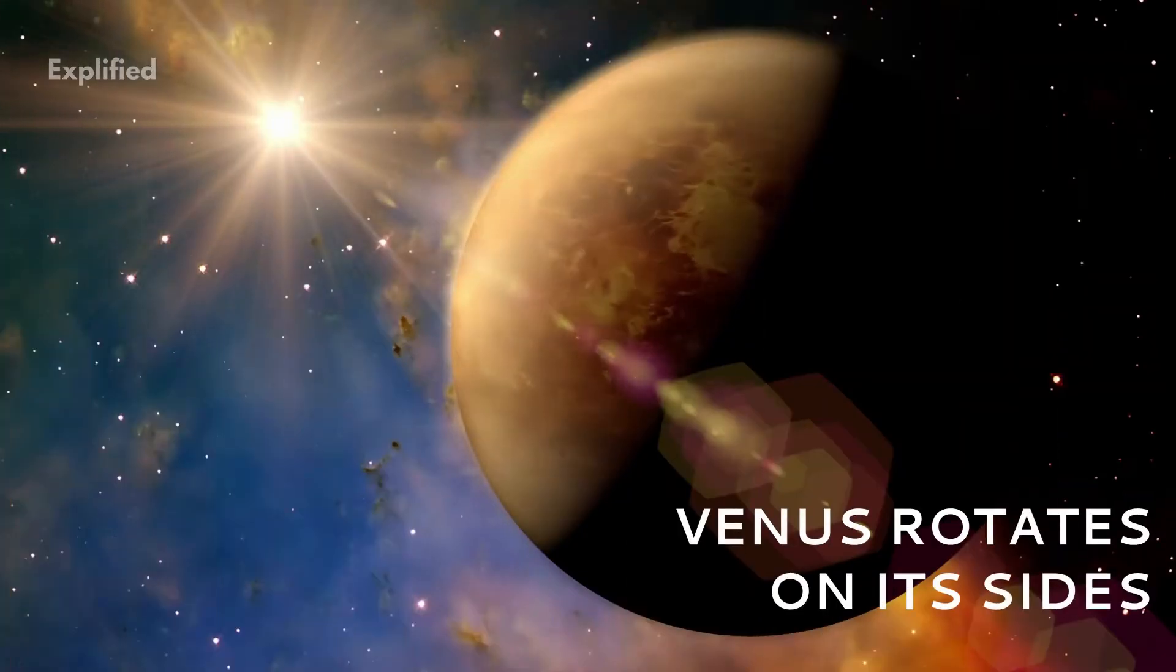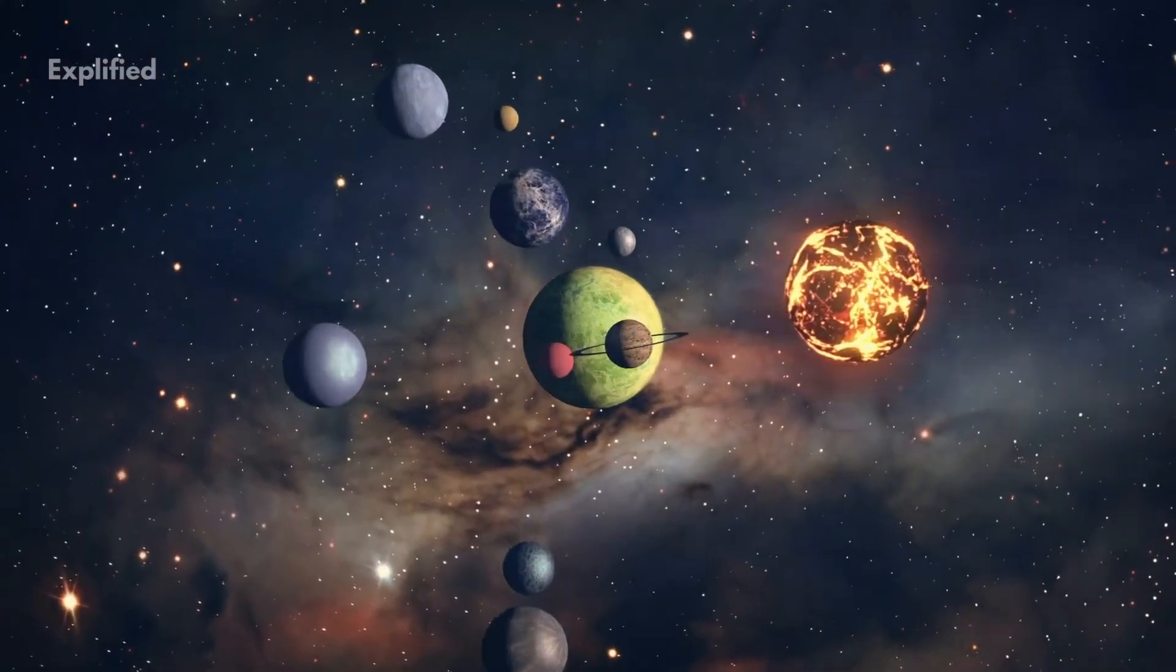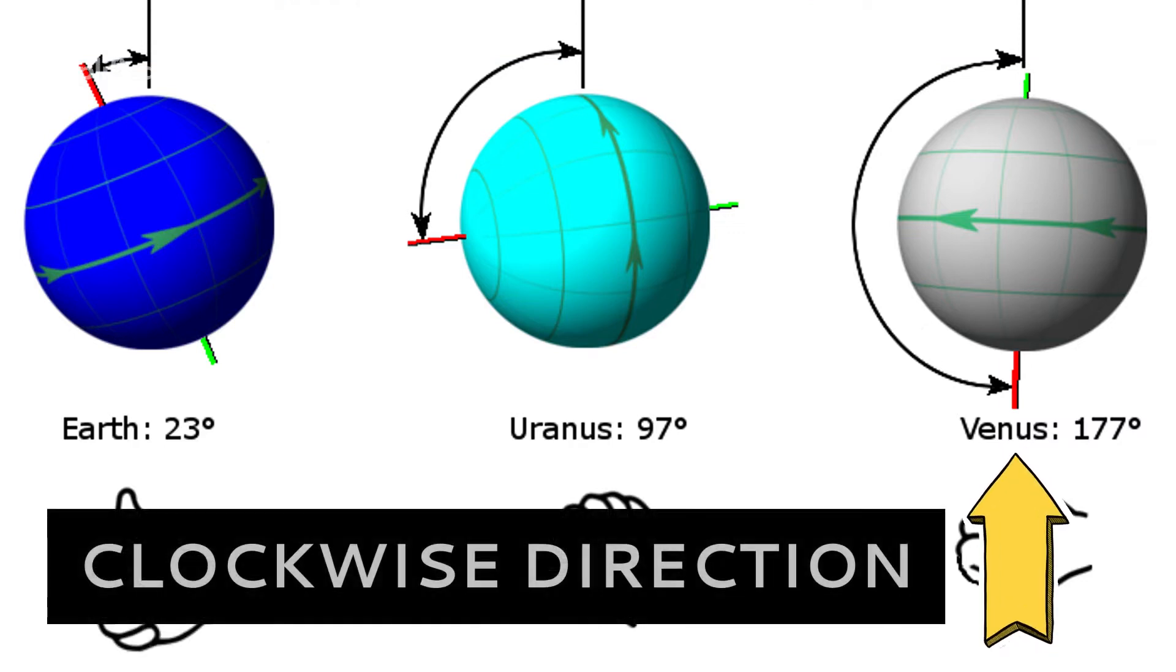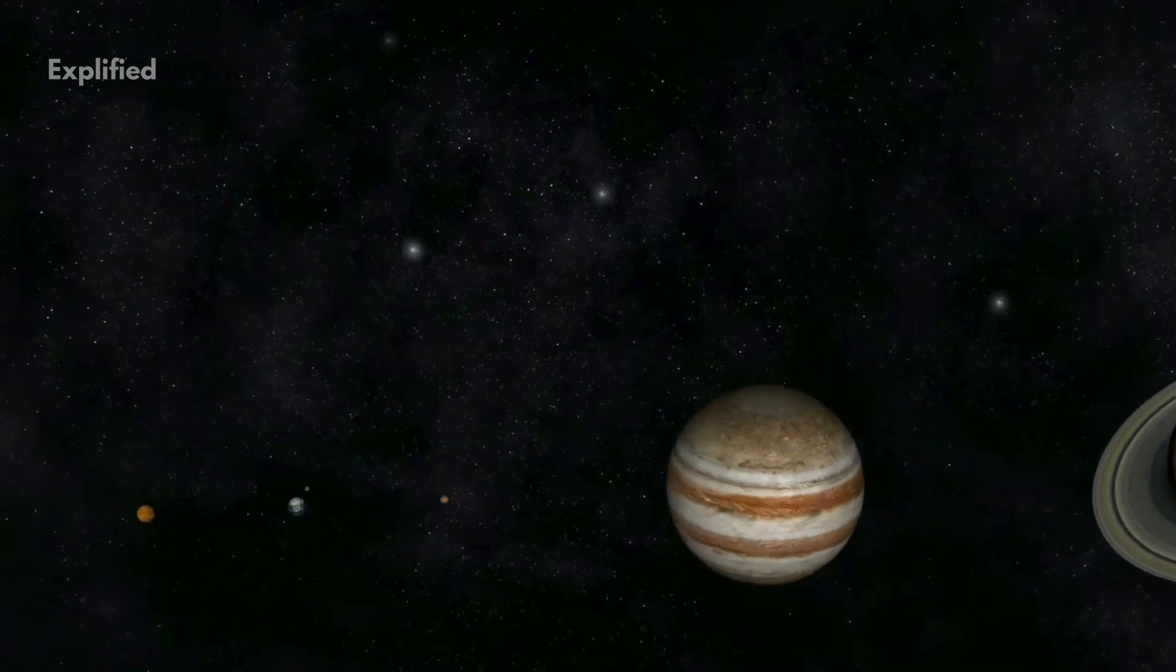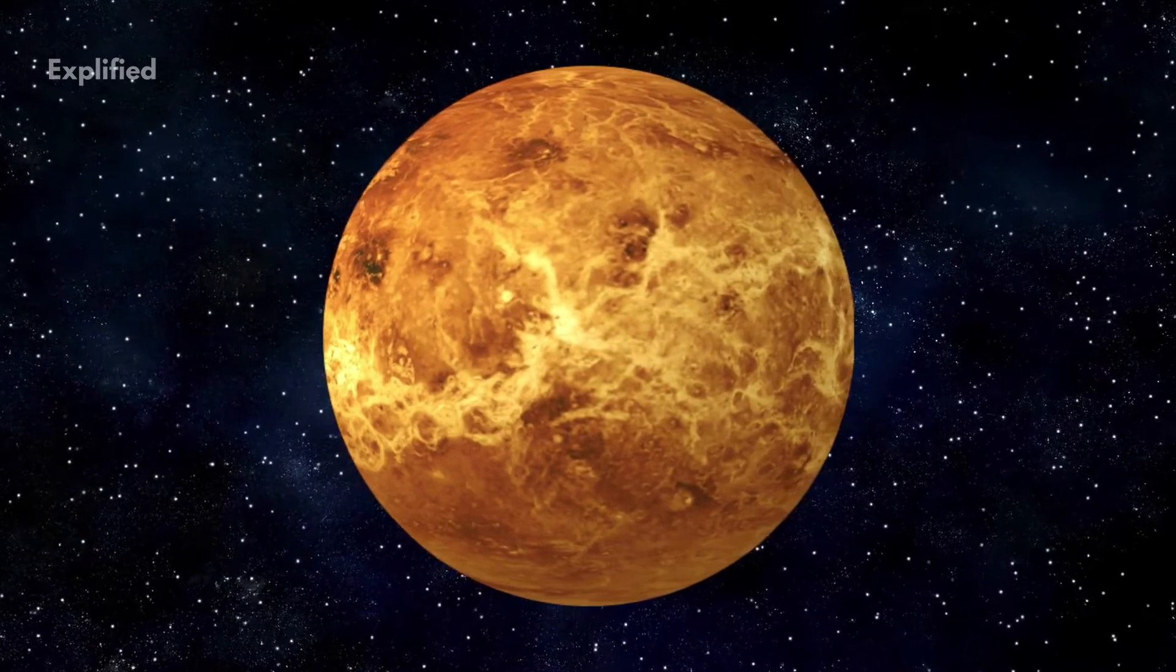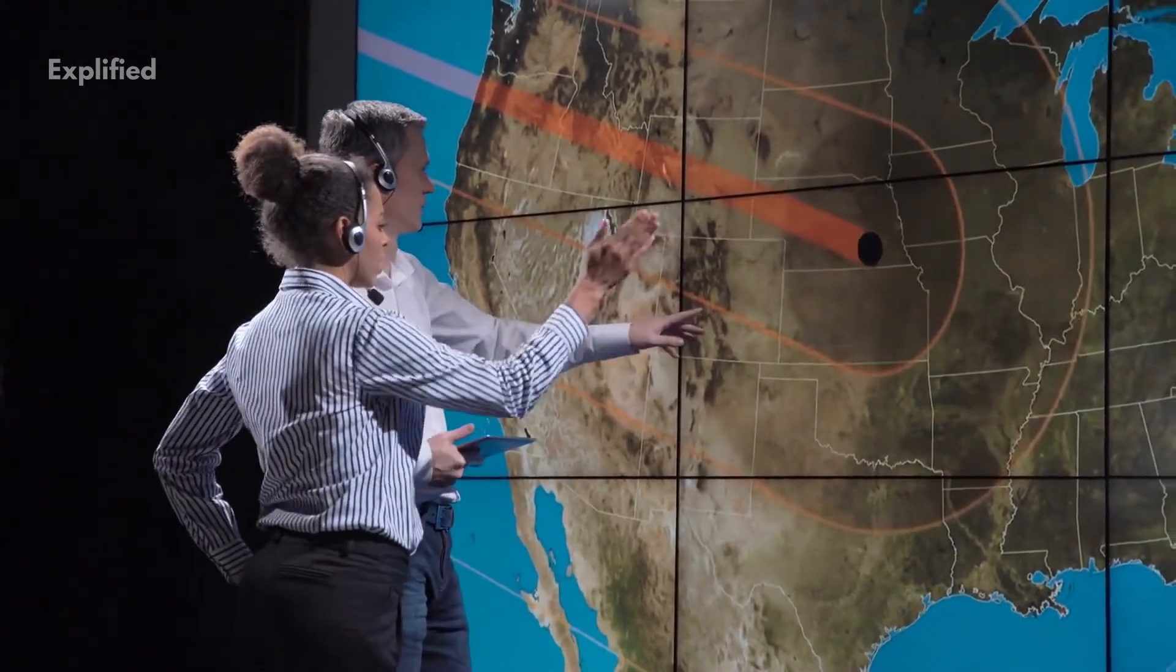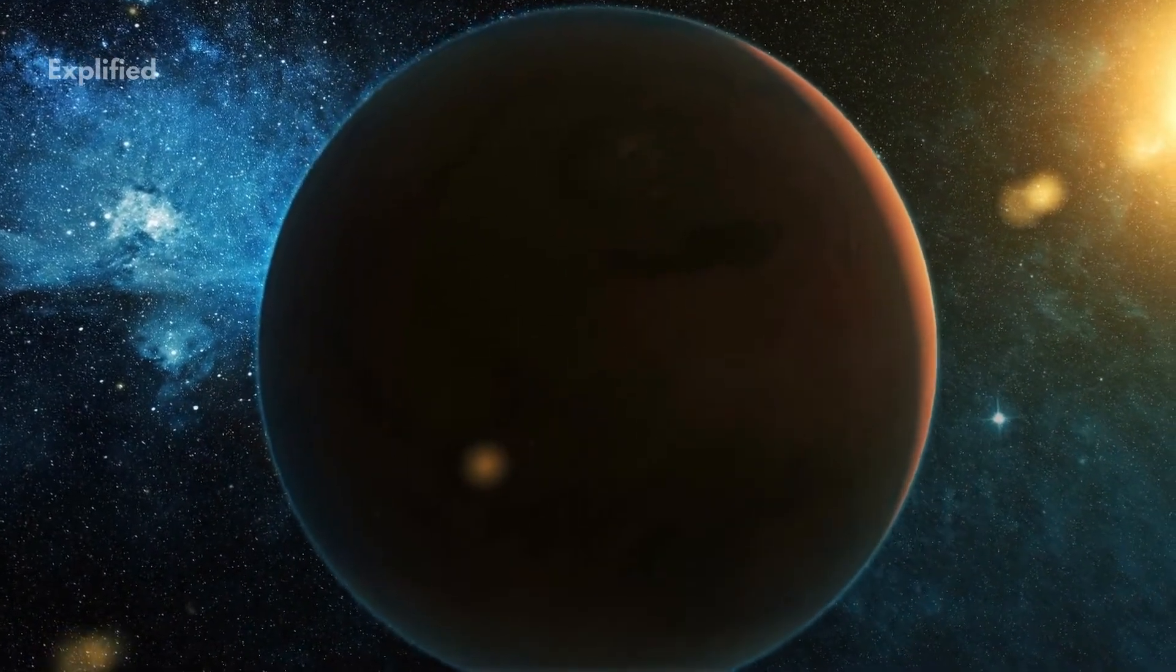Number 3. Venus rotates on its sides. What makes Venus unique is that, unlike any other planet on the solar system, Venus spins on its axis in the clockwise direction. Yes, while all other planets spin anti-clockwise on their axis, Venus is the complete opposite of them all. Astronomers believe that this is because the planet is upside down, since it was knocked off its upright position sometime back in its history.